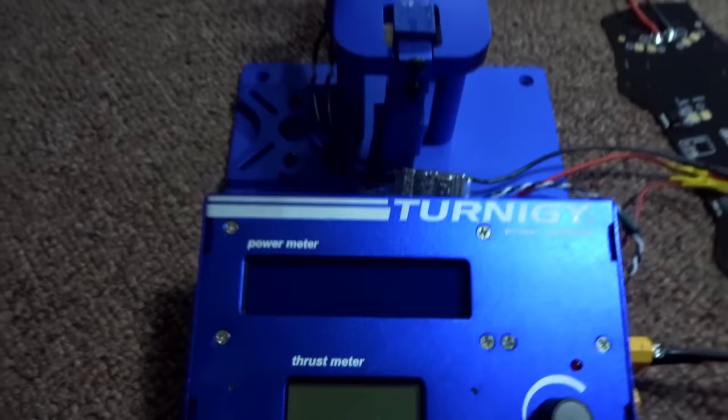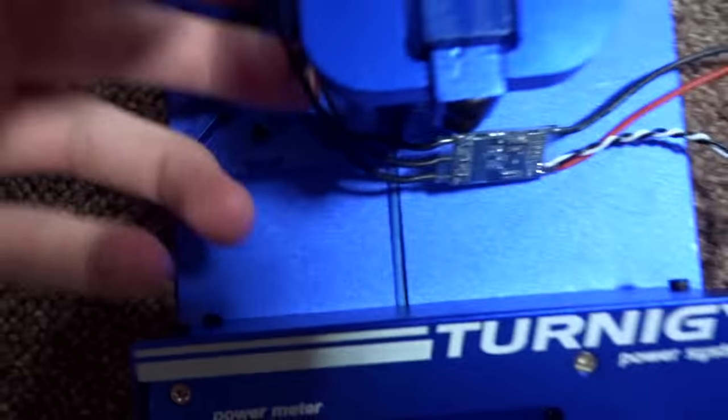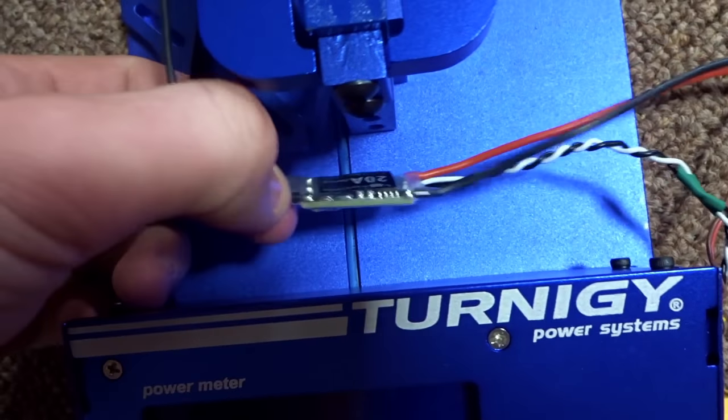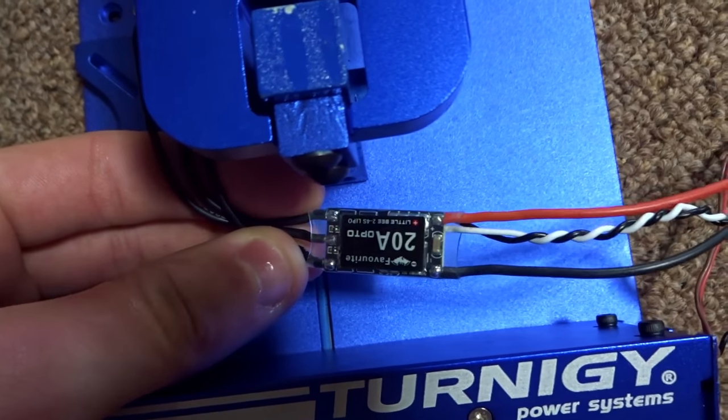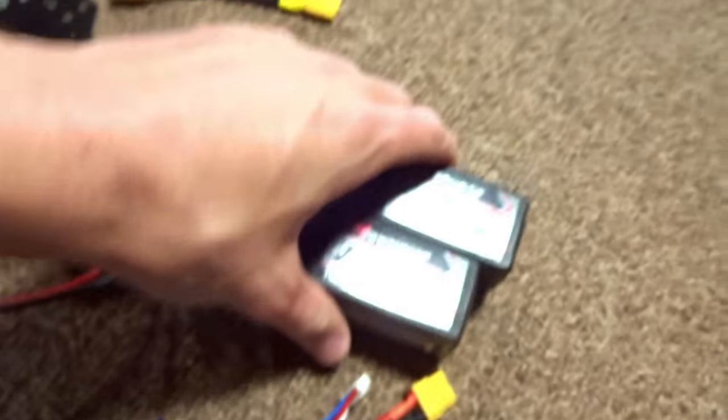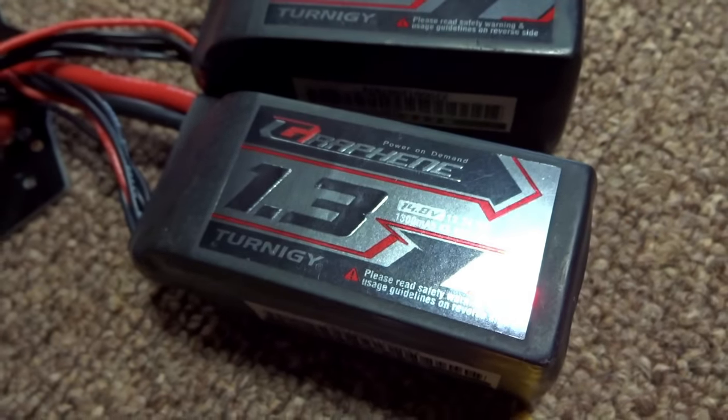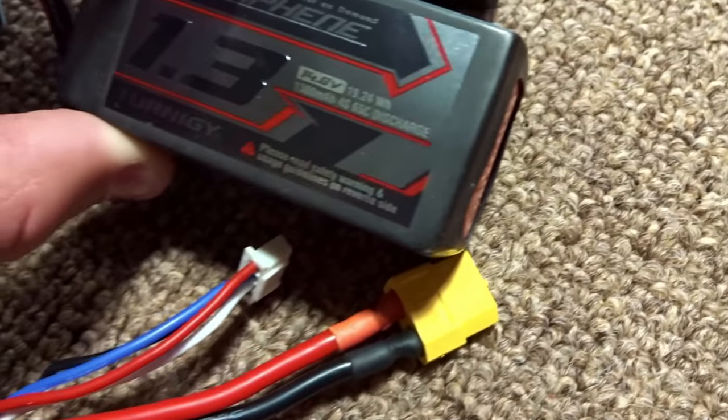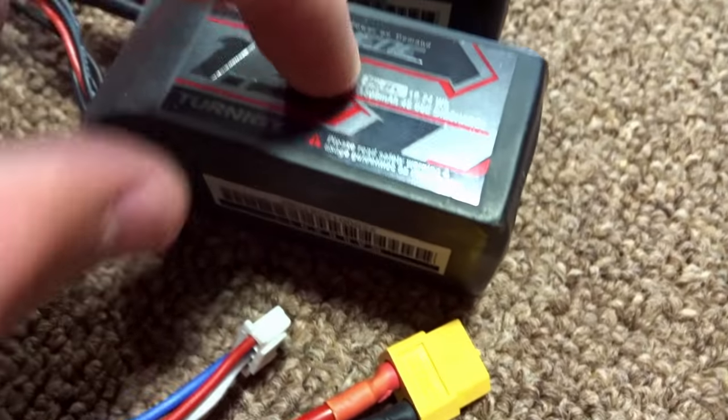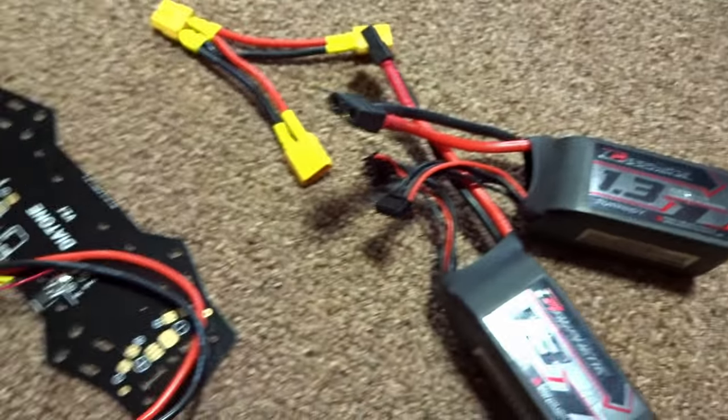It's connected to a 20 amp LittleBee running BLHeli 14.6 with medium timing. These two batteries powering it are Turnigy Graphene 1.3 amp 65C 4S. I run both of them in parallel to get the most out of our motor.